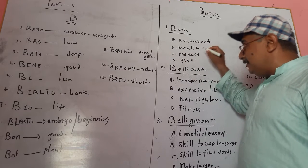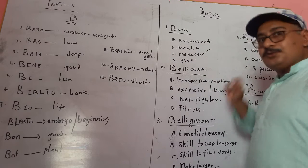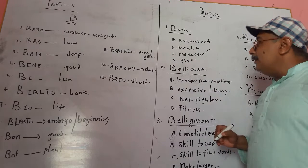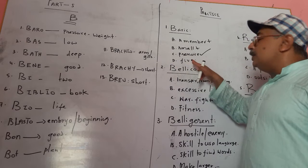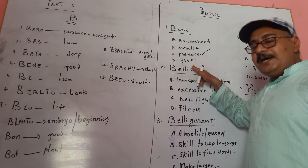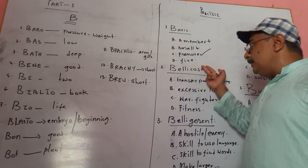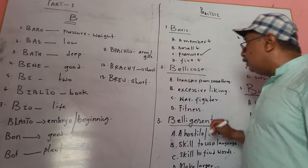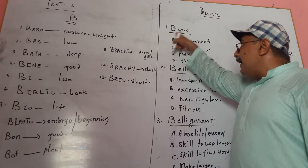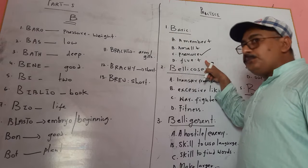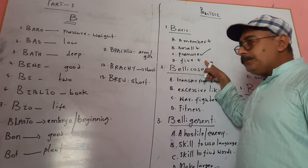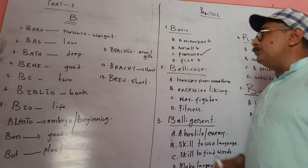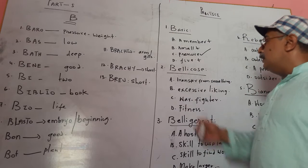Looking at the options: option A — a member — this could not be. Option B — smog — this could not be. Option C — pressure — yes, this could be. Option D — definitely cannot be. So 'baric' means pressure. That is correct.